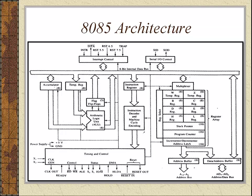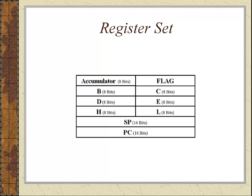The register set of 8085 consists of various general purpose registers namely B, C, D, E, H, L. These are general purpose registers, all of them are 8 bits in width. On the top you find an accumulator register, also called the A register, which is also 8 bit. It has got some special status. Then we have the flag register, the stack pointer, and the program counter.